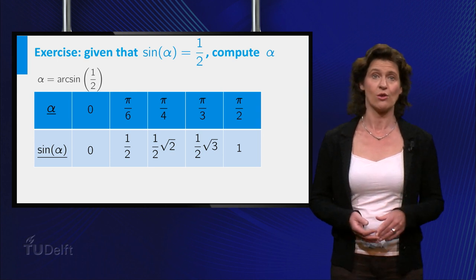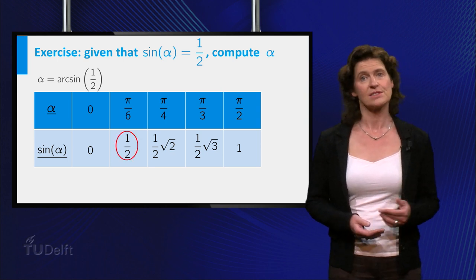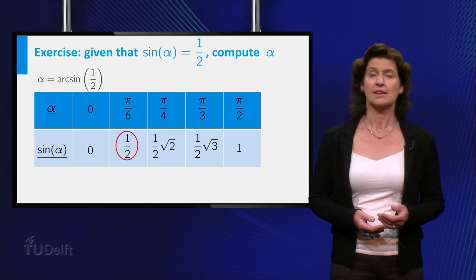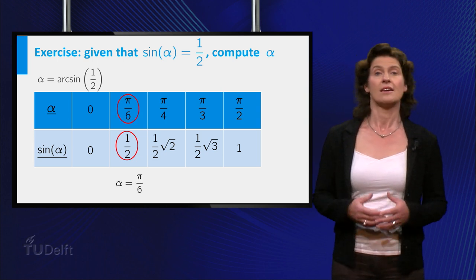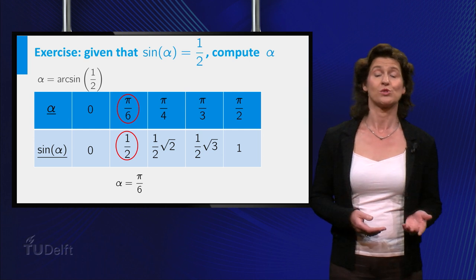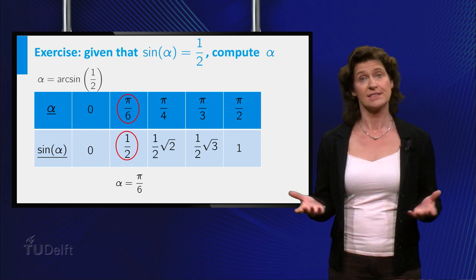Here is the table you probably used to find the sine of certain angles. Just use it the other way around now to find that the angle for which the sine is equal to 1 half is pi over 6. Pi over 6 is in the interval from minus pi over 2 to pi over 2, so this is the answer.